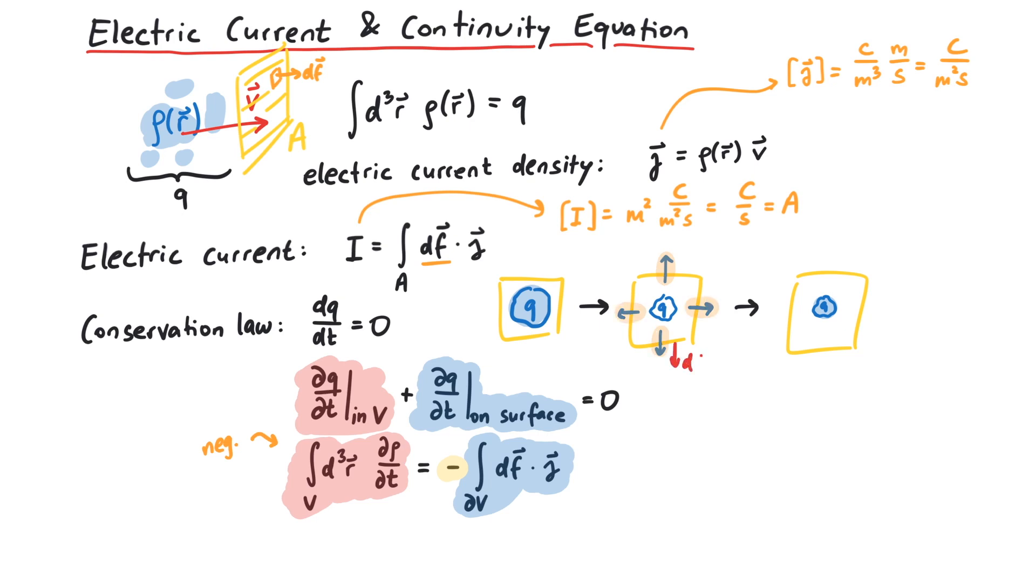This means j and df are parallel, that is, a positive quantity. Therefore, we need the minus sign to also have a negative number on the right.